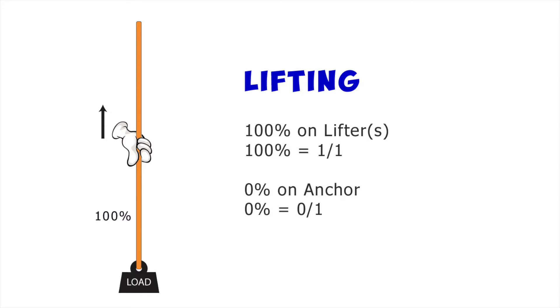Let's take a look at how mechanical advantage plays a role in the load on the anchor. Obviously when I am lifting the load by simply pulling up on the rope without any mechanical advantage, 100% of the load is on me. There is no portion of the load being held by an anchor. I will explain why I listed the fractions in a few minutes.